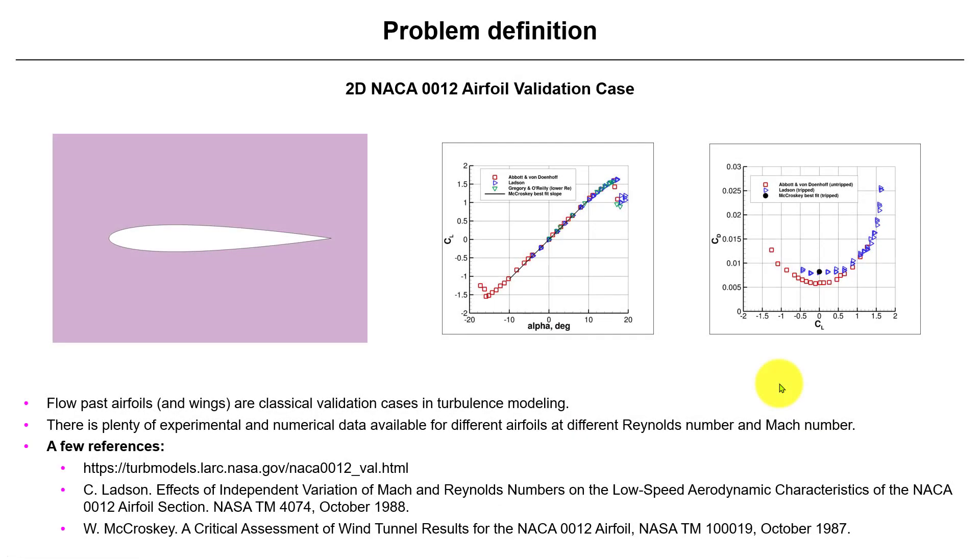Hi there, welcome to tutorial eight. In this case, we're going to work with a classical case in CFD validation: the flow about an airfoil. In this case, we're going to use the NACA 0012, and this case has a lot of validation data.